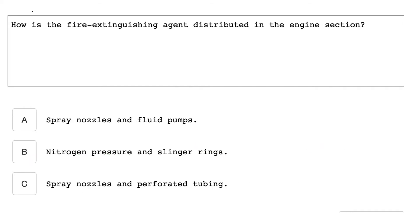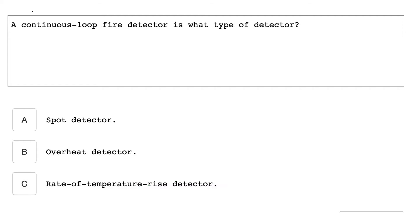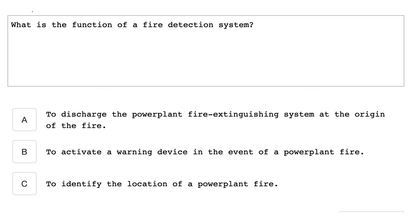How is the fire extinguishing agent distributed in the engine section? Spray nozzles and perforated tubing. A continuous loop fire detector is what type of detector? An overheat detector. What is the function of a fire detection system? To activate a warning device in the event of a powerplant fire.